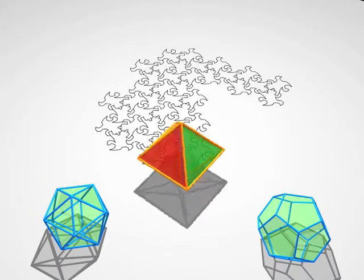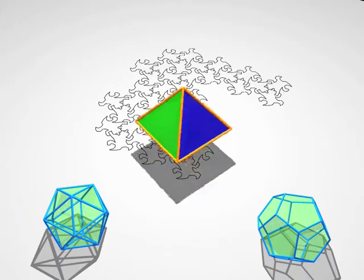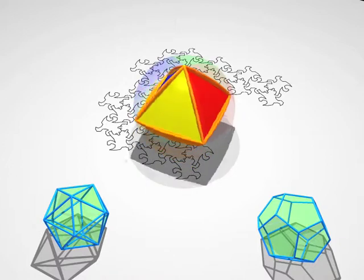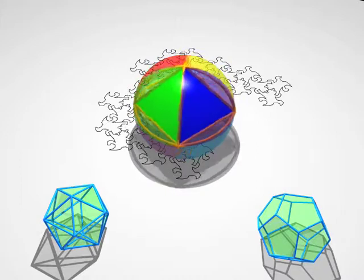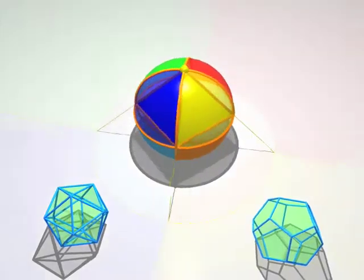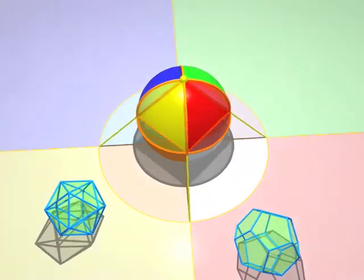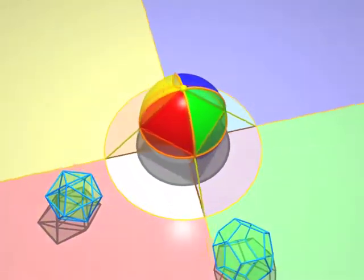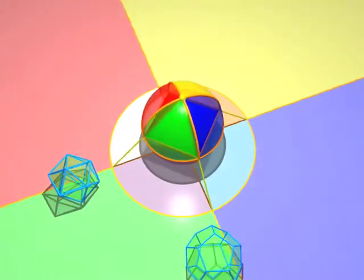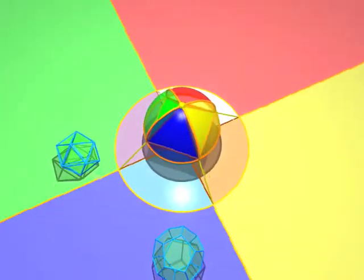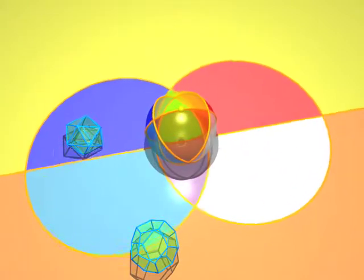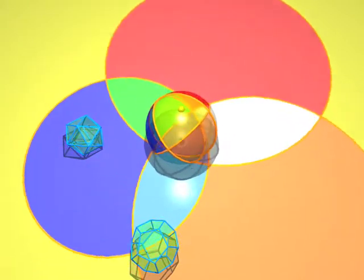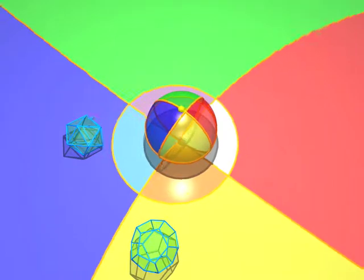And now here comes an octahedron. You see the eight coloured faces. Look how the projections of the edges are arcs of circles.